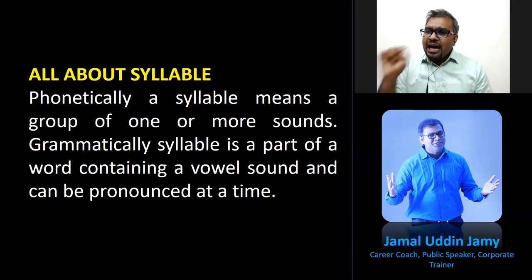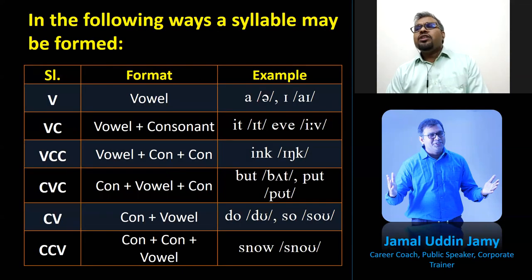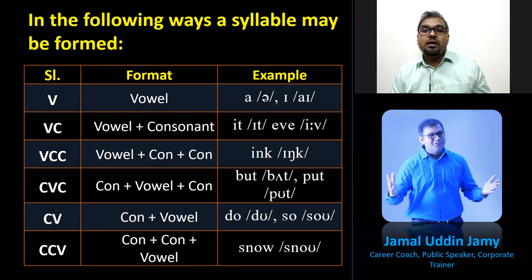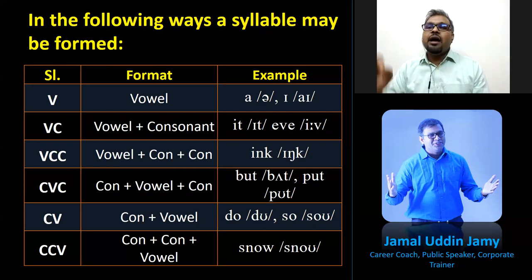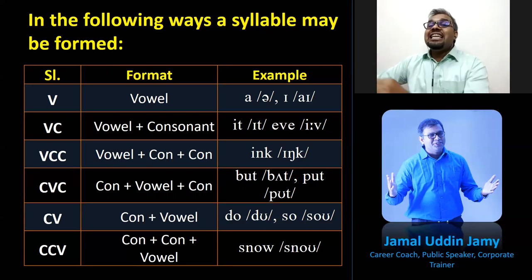A syllable must have a vowel sound. A syllabic consonant can also form a syllable. In the following ways, a syllable may be formed: vowel only — a vowel can form a syllable, like 'I'. Then vowel plus consonant (VC), like 'if'. Then vowel plus consonant plus consonant (VCC).